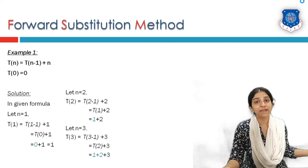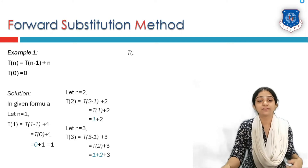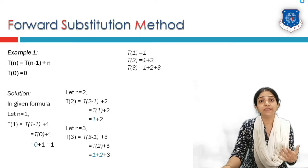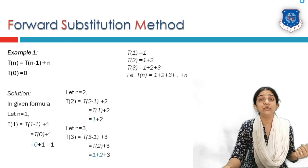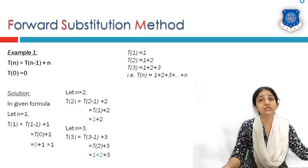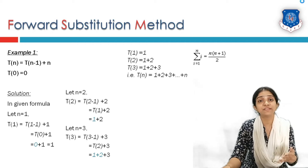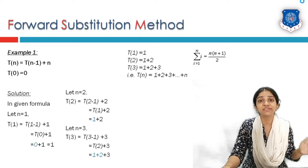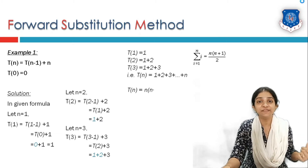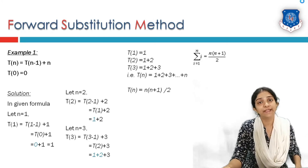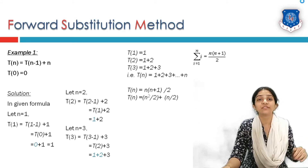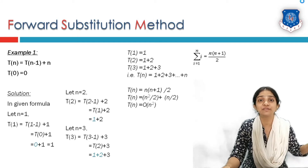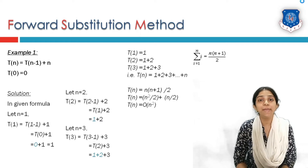For T(3) = T(2) + 3 = 1 + 2 + 3. So we can observe: T(1) = 1, T(2) = 1+2, T(3) = 1+2+3. This is a simple summation series given as the sum of i from 1 to n, which expands to n(n+1)/2. That equals n²/2 + n/2. So the complexity of this recurrence relation is O(n²).